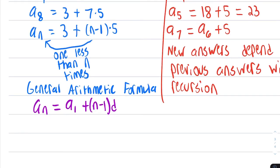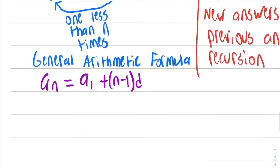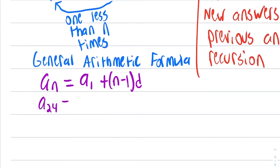Let's use this to find a24, which was our original goal. To get a24, we're just going to fill in the things that we know. So we know that 3 is the first number. We're going to multiply by 1 less than the number 24, which is 23. And then d was 5.